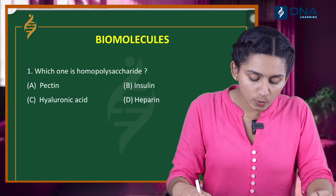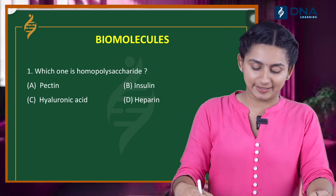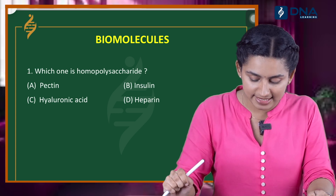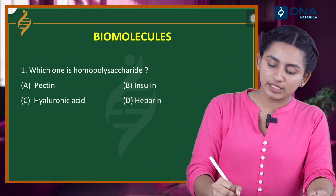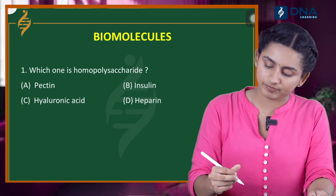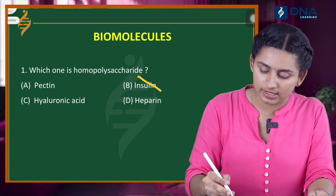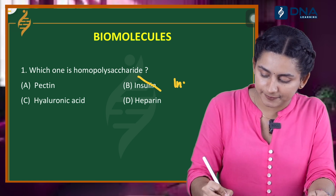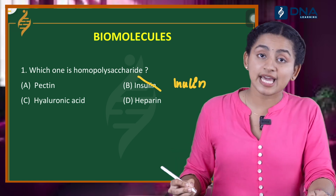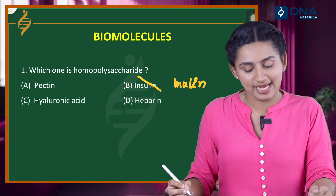Question number 1: Which one is a homopolysaccharide? We have 4 options. Option A, pectin. Option B, inulin. Option C, hyaluronic acid. Option D, heparin.